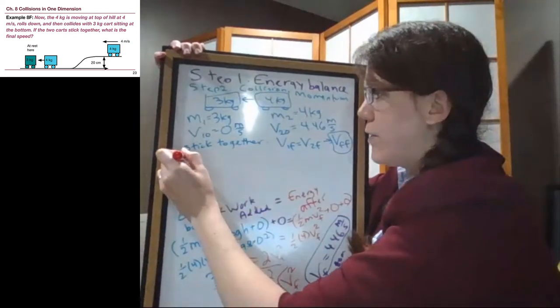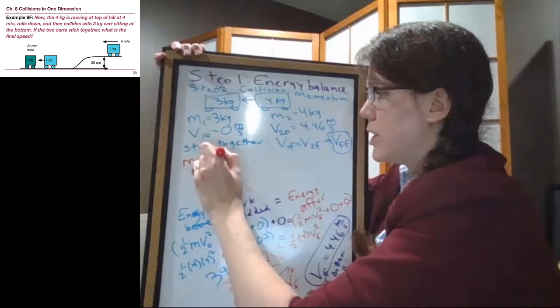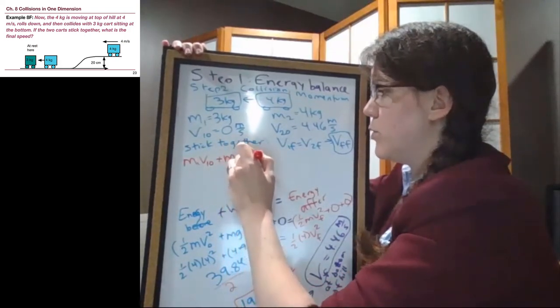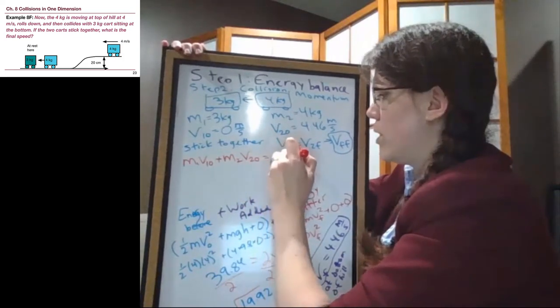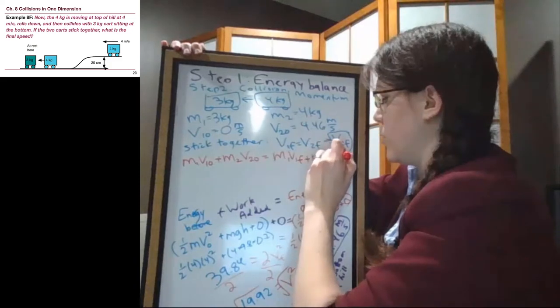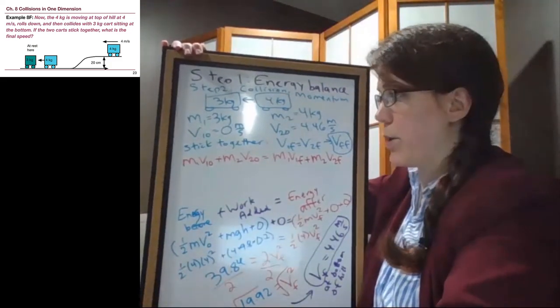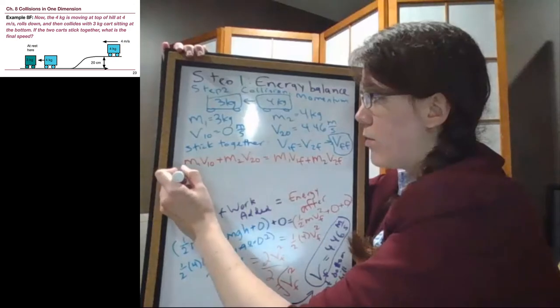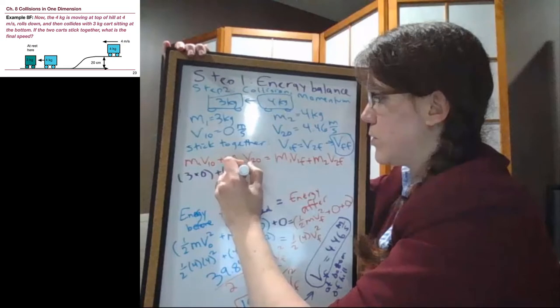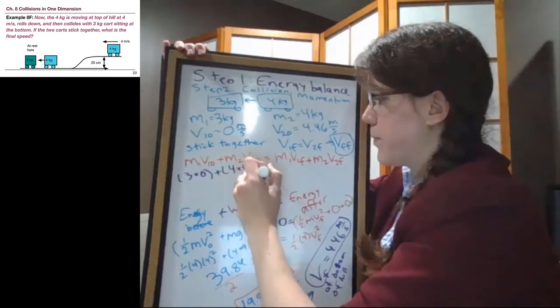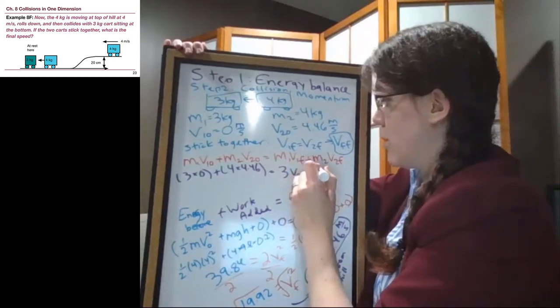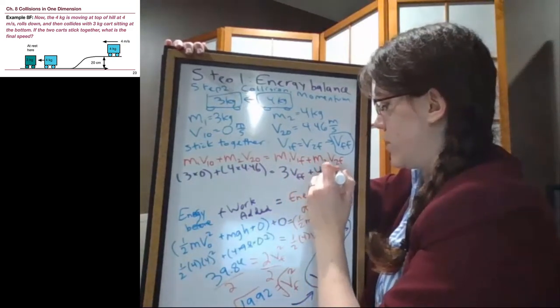And so to have it stand out, I'll write the momentum conservation equation in red. M1 V1 initial plus M2 V2 initial equals M1 V1 final plus M2 V2 final. And then I'll plug in numbers. So we have 3 times 0 plus 4 times 4.46 is equal to 3 V final final plus 4 V final final.